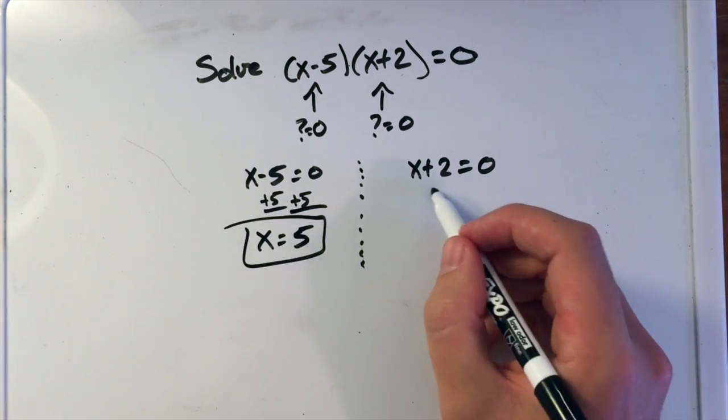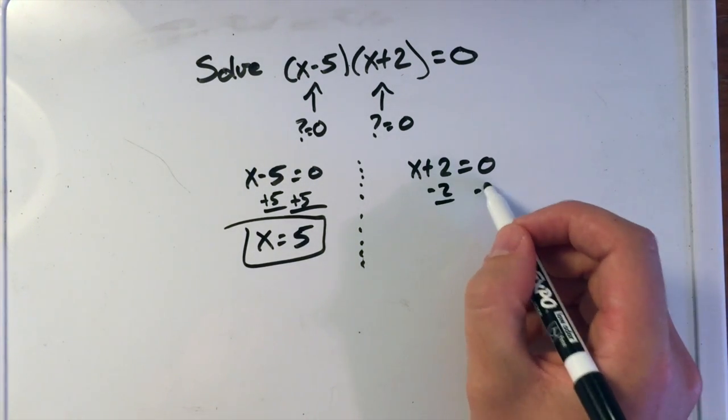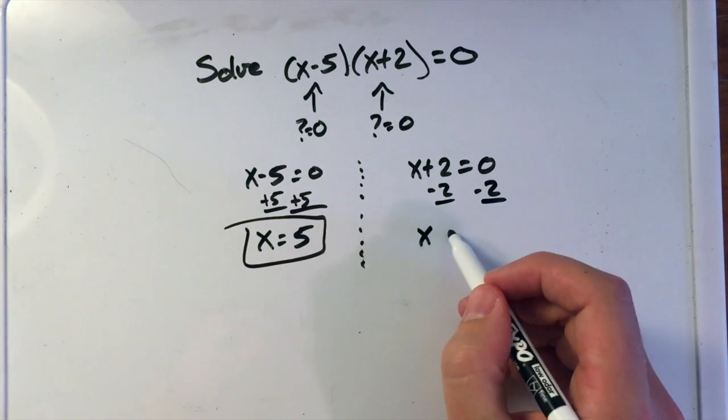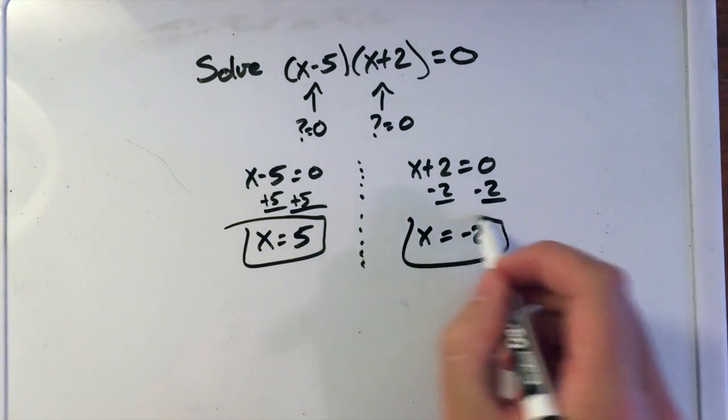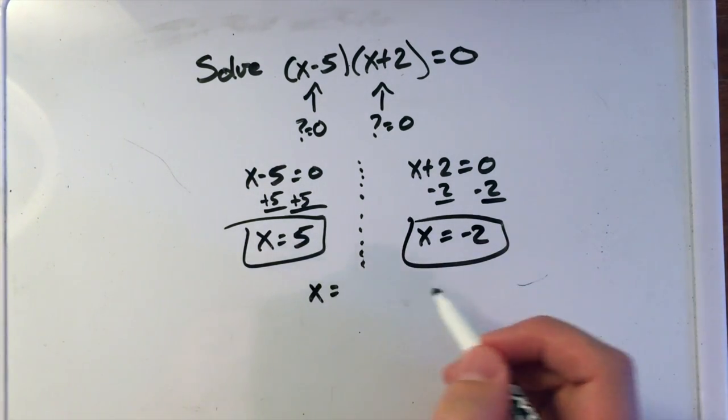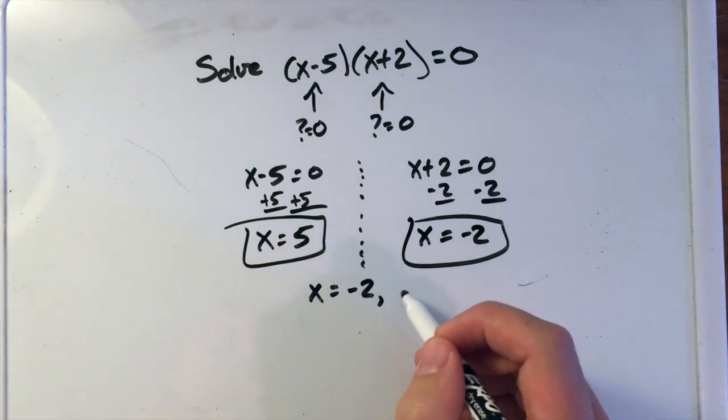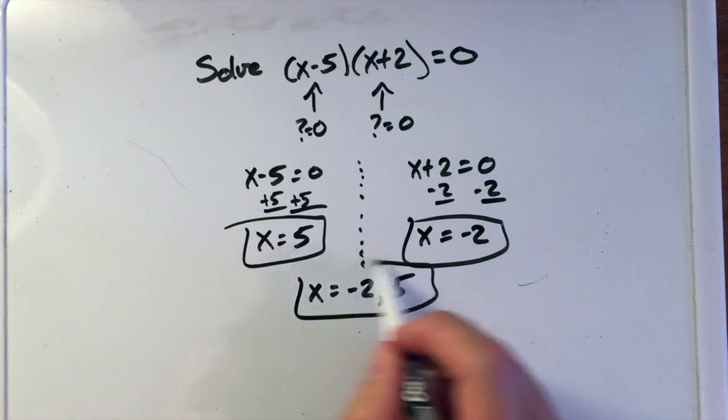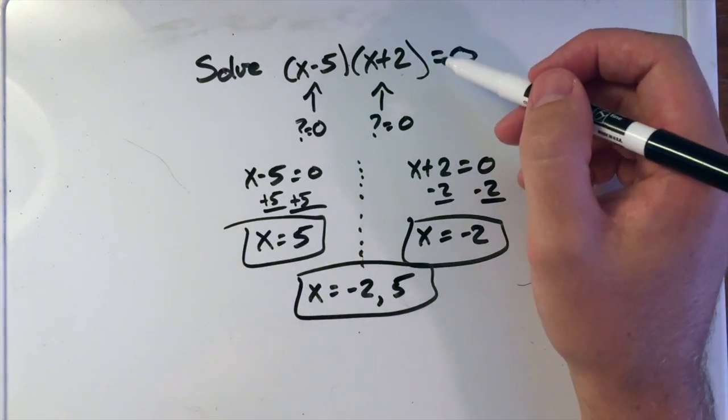On the right-hand side, we subtract 2 from both sides, and we're left with x equals negative 2. So now we have two answers for our solution: x equals negative 2 and 5. These are two solutions for the equation above.